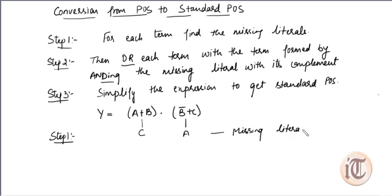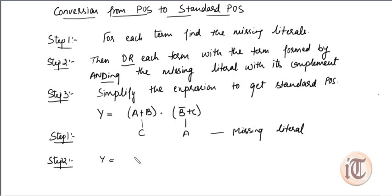In step two, we have to OR each term with the term formed by ANDing the missing literal and its complement. The missing literal in the first term is C, and the missing literal in the second term is A. So the first whole term is ORed with the term formed by ANDing the missing literal C and its complement C̄: giving A + B + (C · C̄).